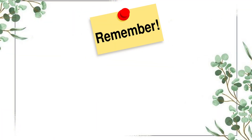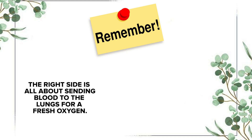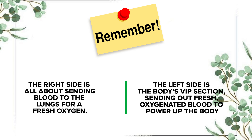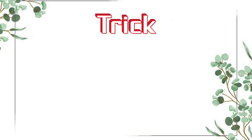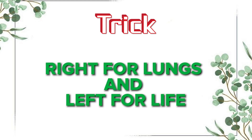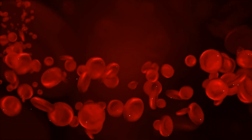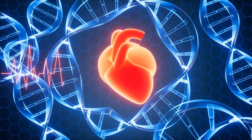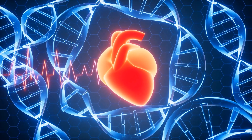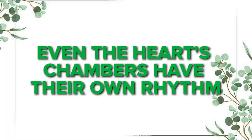So if you're ever confused about which side of the heart does what, just remember: the right side is all about sending blood to the lungs for a fresh oxygen boost, and the left side is the body's VIP section, sending out fresh oxygenated blood to power up the body. Here is the trick to help you remember — right for lungs and left for life. The right side works to oxygenate the blood, and the left side pumps the oxygenated blood to every part of your body. Easy, right?